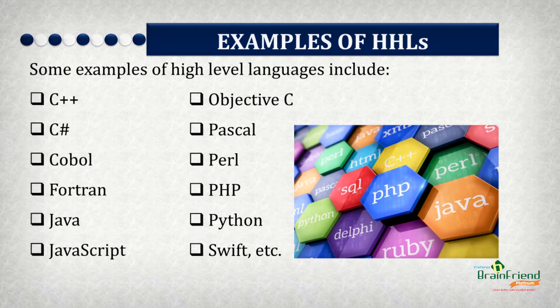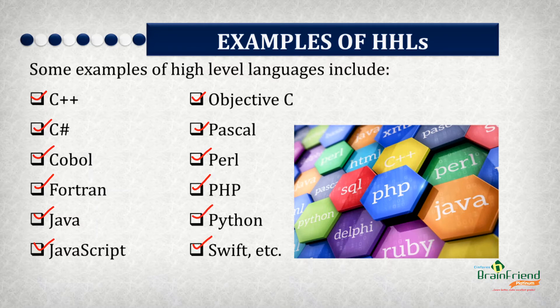Let's look at some examples of high-level languages. They include C++, C Sharp, COBOL, Fortran, Java, JavaScript, Objective-C, Pascal, Perl, PHP, Python, Swift, and so on.